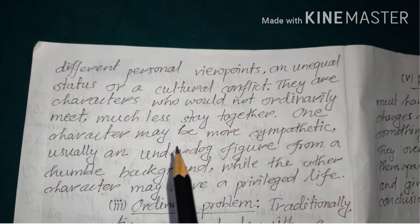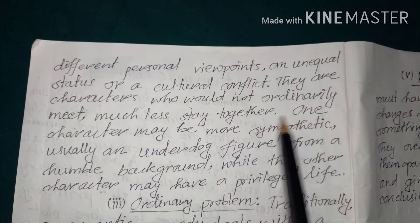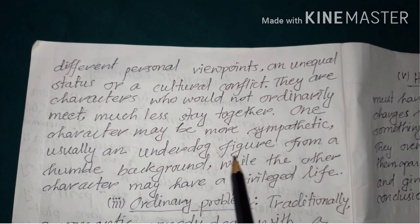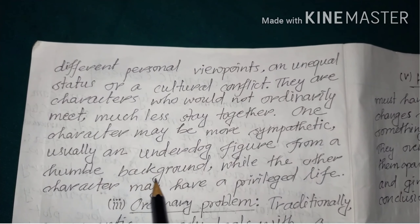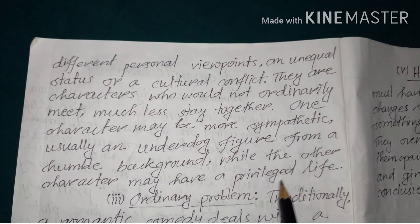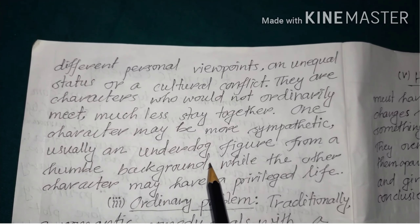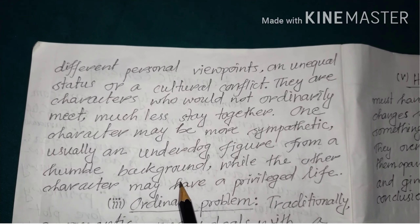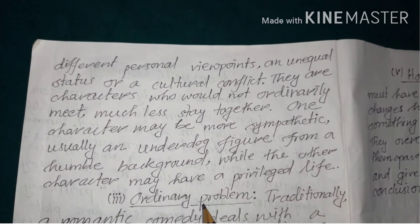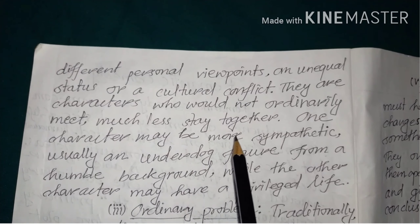One character may be more sympathetic, usually an underdog figure from a humble background, while the other character may have a privileged life. The two main characters are different — one is very sympathetic, usually an underdog figure from a humble background, and the other has a privileged life.